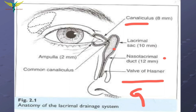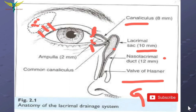This is the lacrimal gland, and here will be the lacrimal ducts which open into the eye. This is the upper canaliculus and this is the lower canaliculus, and the lacrimal puncta are the small openings at the starting of the canaliculi. The lacrimal sac has a capacity of 10mm, which collects the tears before the drainage process.